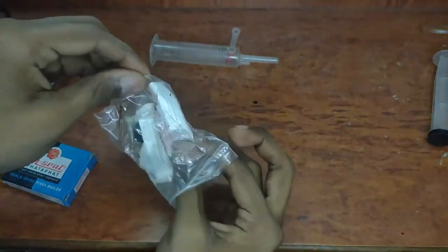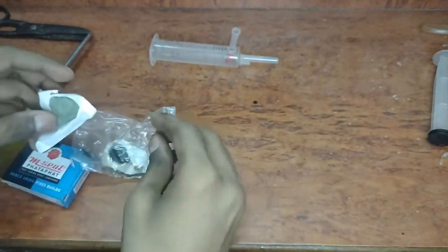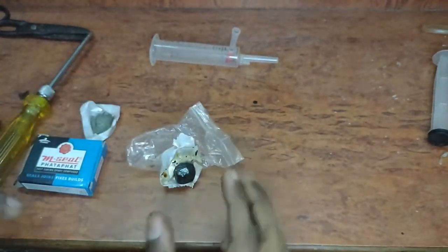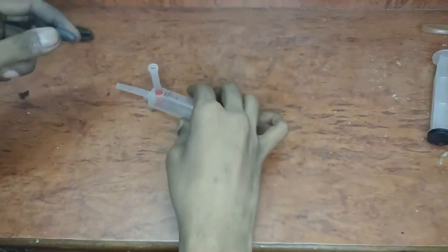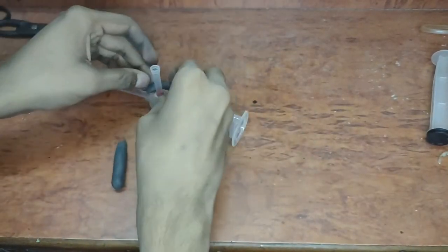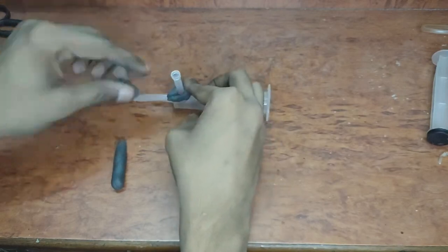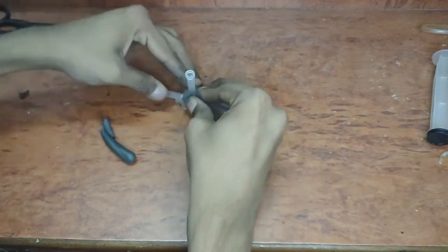Then I took epoxy putty, mixed the two regions, and applied the epoxy over the joints to completely seal the joints. I also filled some epoxy putty inside the nozzle of the syringe to seal it.